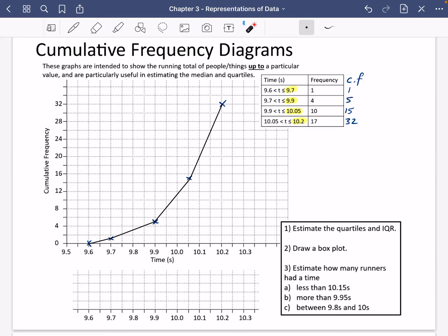So we've drawn the cumulative frequency diagram. And the next thing we're going to do is look through these questions. We want to estimate the quartiles and the interquartile range. Well, we can clearly see that there are 32 things here. So the lower quartile would be 32 divided by 4, so it's going to be the 8th position.